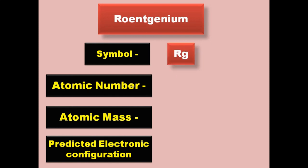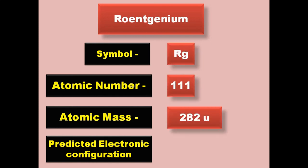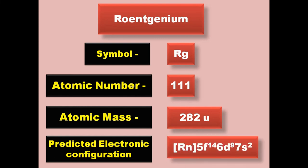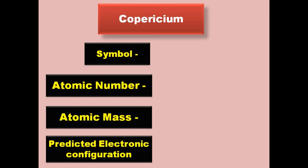Roentgenium has symbol Rg, atomic number 111, atomic mass 282, predicted electronic configuration [Rn] 5f14 6d9 7s2. Roentgenium is a transition metal and is expected to be solid at room temperature.